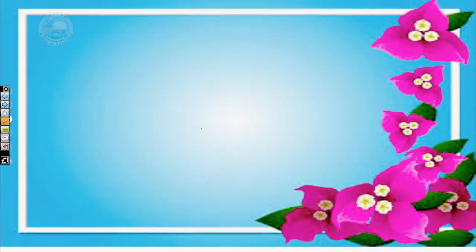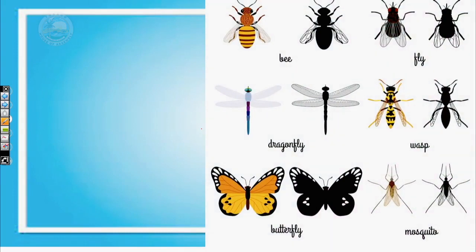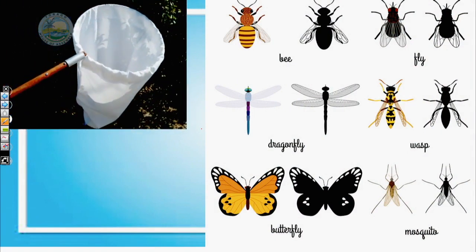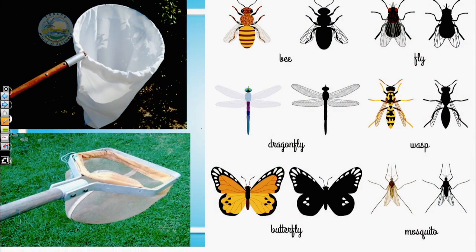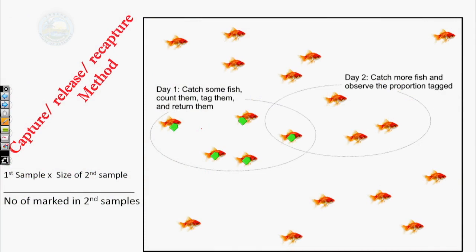But what about if they are flying? We can't use a pooter and we definitely can't use a quadrat. In that case, we would use sweeping nets or butterfly nets. Sometimes we don't necessarily need to remove the organism from their environment to study them. So if we just want to determine population size, we can use the capture, release, and recapture method.